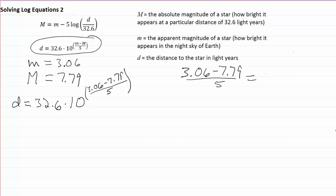When I do the subtraction, I would get a minus 4.73 over 5, and that happens to be minus 0.946. I'll have to be careful when I put that into my calculator. So the equation that I've got over here now becomes 32.6 times 10 to the minus 0.946.